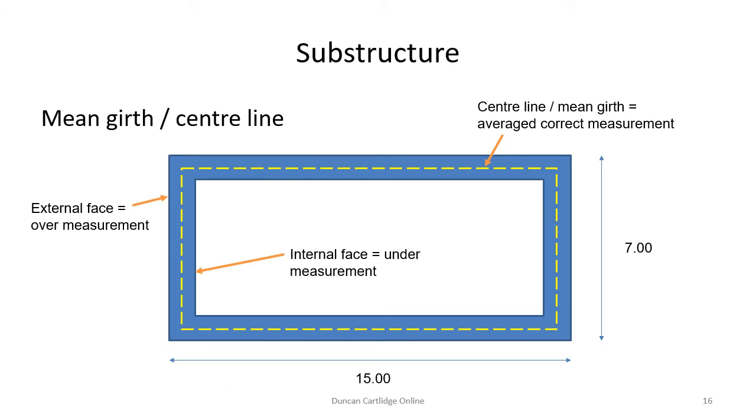This slide shows the logic behind the use of mean girths or centre lines. Calculate the length using the external face and you over-measure. Again, if you calculate the length using the inside face, you under-measure. Therefore, use the average of the two or centre line girth, shown here in yellow.